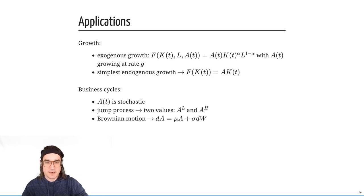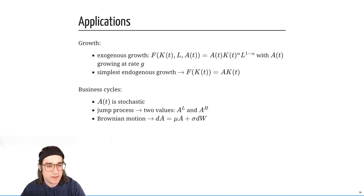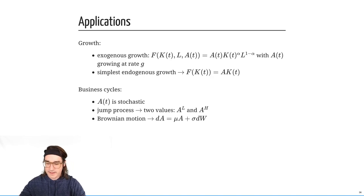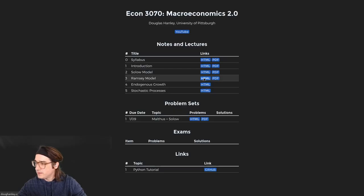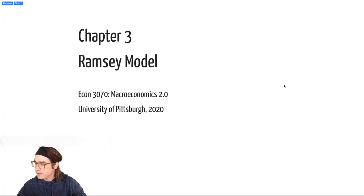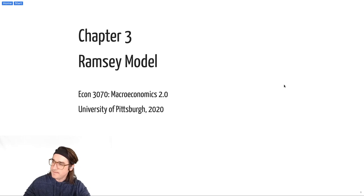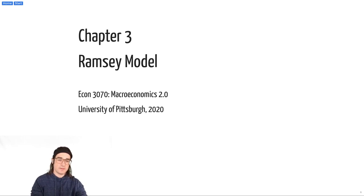Any final concerns or questions regarding Solow before we move on to Ramsey? Okay, I think we've seen enough of that guy. Let's move on. We're going to open up Ramsey — this is chapter three. So I'm going to call it the Ramsey model. It's got many names, which I'll go over in the next few slides. But really what we're just doing is endogenizing the savings rate.